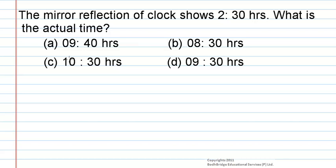The mirror reflection of clock shows 2:30 hours. What is the actual time? The options are 9:40 hours, 8:30 hours, 10:30 hours, or 9:30 hours.